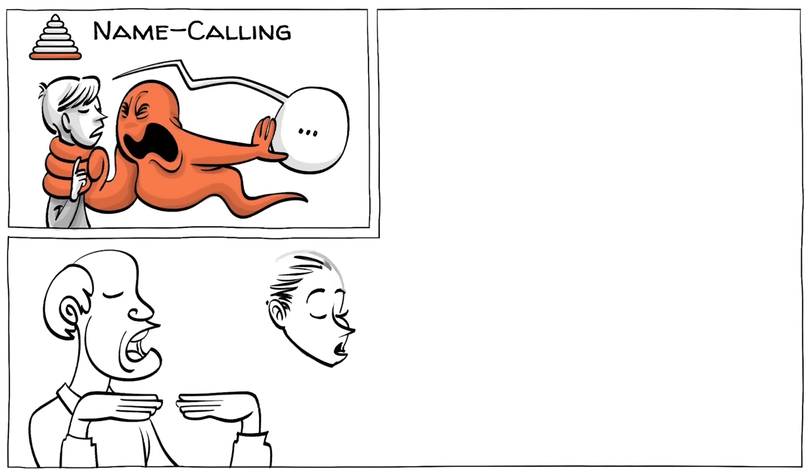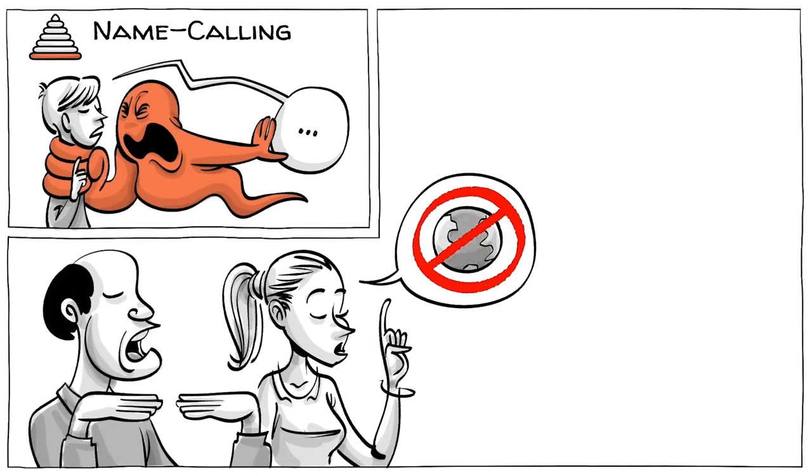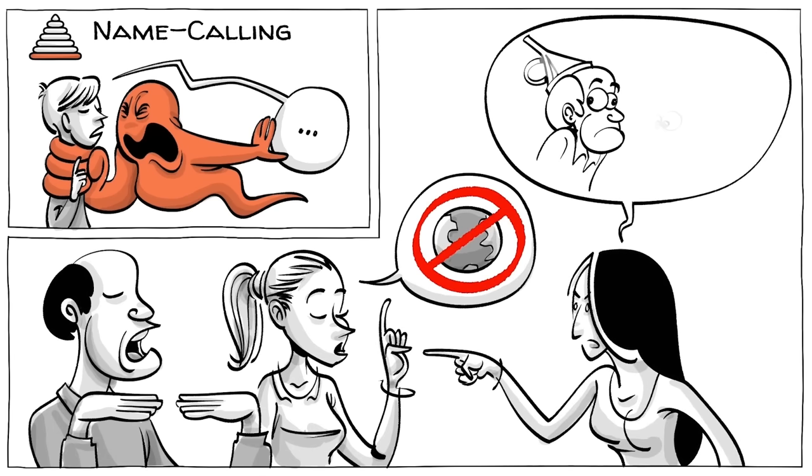The lowest level is name-calling, which attacks the person and not what they say. If Bob and Jen say, we are educators and the world ain't round, you may answer, you are idiots.